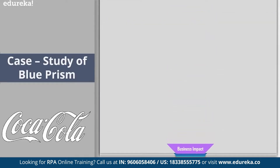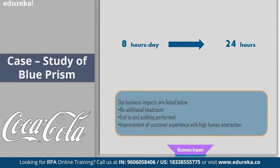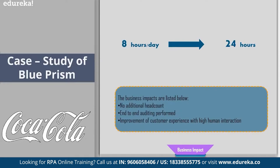Let me quickly tell you the business impact of using Blue Prism for Coca-Cola. The company started delivering better operational efficiencies with the production capacity extended from 8 hours a day to 24 hours — that's almost three times. Apart from this, there was no need for additional headcount, so the manual workforce was reduced. There was end-to-end auditing performed on each and every change that occurred. It also improved the customer experience with high human interaction — instead of humans performing data entry tasks every day, the workforce of Coca-Cola started harnessing their talents by improving human interaction. That's how Coca-Cola benefited by using Blue Prism.